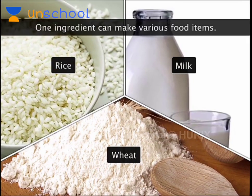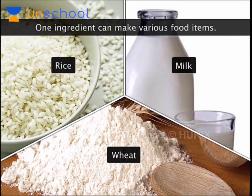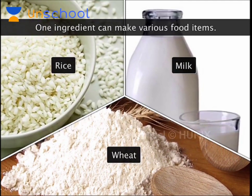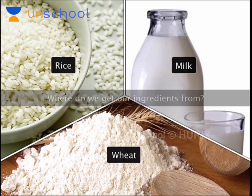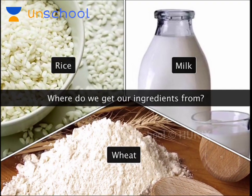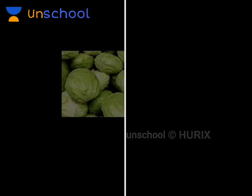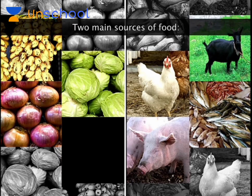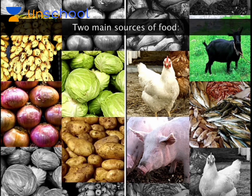We saw that most ingredients can be used to make various types of food items. But where do we obtain these ingredients? All the food that we eat mainly comes from two sources: plants and animals. We will look at both these sources in detail.